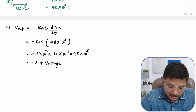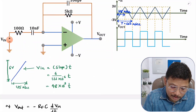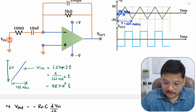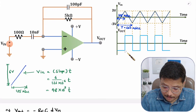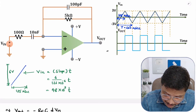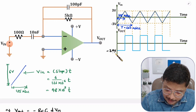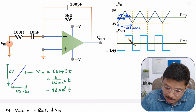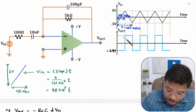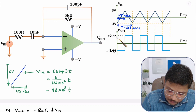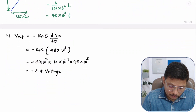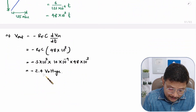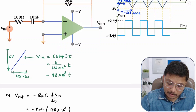So if you observe, for a triangular wave input, the output will be a square wave. The voltage at the output will be minus/plus 2.4 volts — that is how the waveform will appear at the output side. That is what I have explained for this equation.